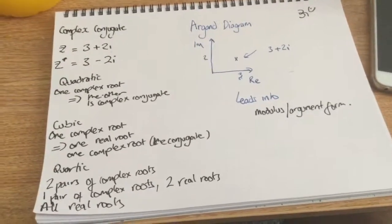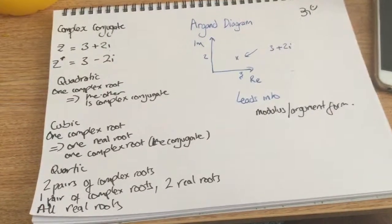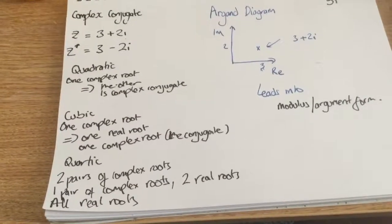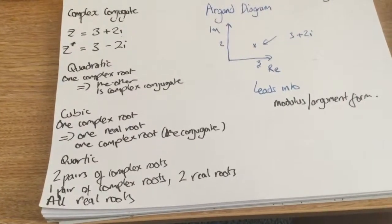The one after this, the next video, is going to be pretty lengthy, so let's call this the calm before the storm. All right, so what have we got here? Complex conjugates - what are they?